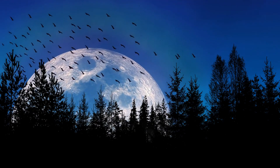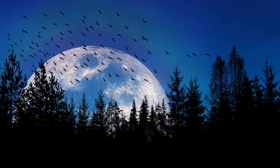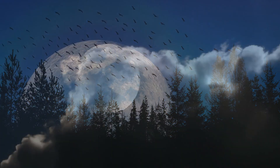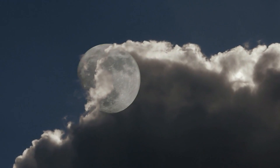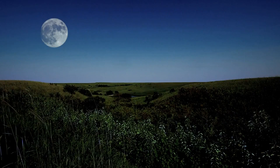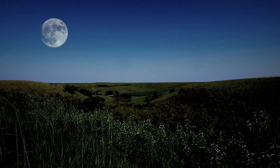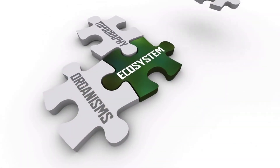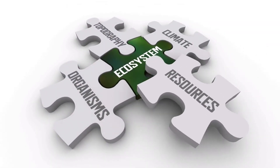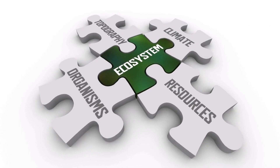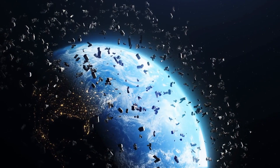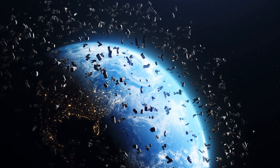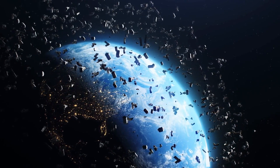Animals that rely on lunar cues for migration, such as certain birds and sea turtles, may face challenges in navigating with multiple moons. Some plants use moonlight cues for growth and reproduction, and multiple moons could affect these processes, potentially altering ecosystems. More moons also mean more potential collision hazards from space debris, posing risks to satellites and space missions.